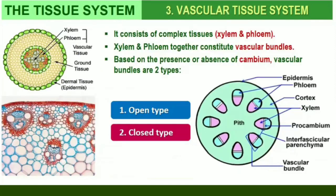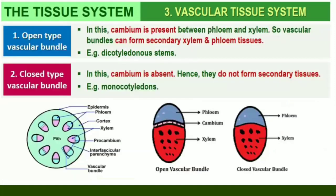The Vascular Tissue System. The vascular system consists of complex tissues, the phloem and the xylem. The xylem and phloem together constitute vascular bundles. In dicotyledonous stems, cambium is present between phloem and xylem. Such vascular bundles, because of the presence of cambium, possess the ability to form secondary xylem and phloem tissues, and hence are called open vascular bundles. In monocotyledons, the vascular bundles have no cambium present in them, and since they do not form secondary tissues they are referred to as closed.